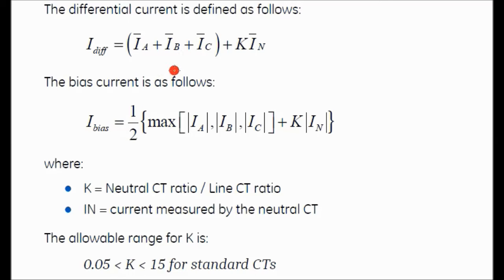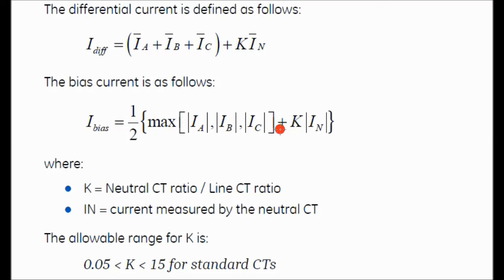During normal balanced load conditions, Ia + Ib + Ic equals zero, and since the current is balanced there is no neutral current, so In equals zero — therefore I_diff equals zero. The bias current equals half of the maximum of any phase current plus K × In, where In is again converted to the same ratio as the phase currents.